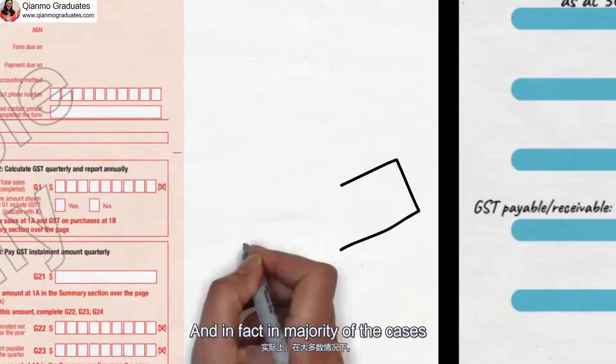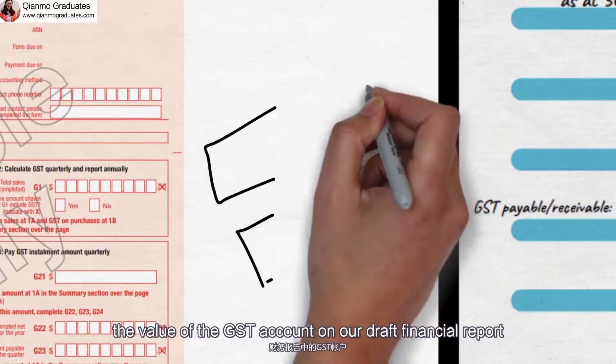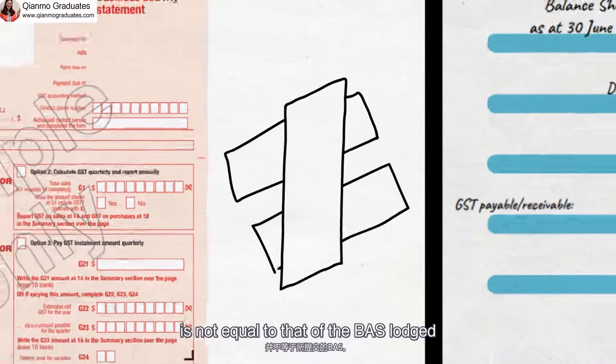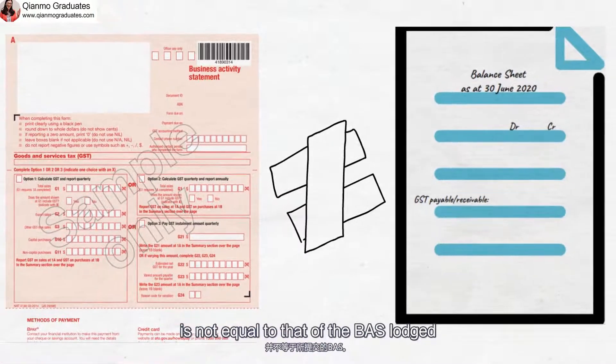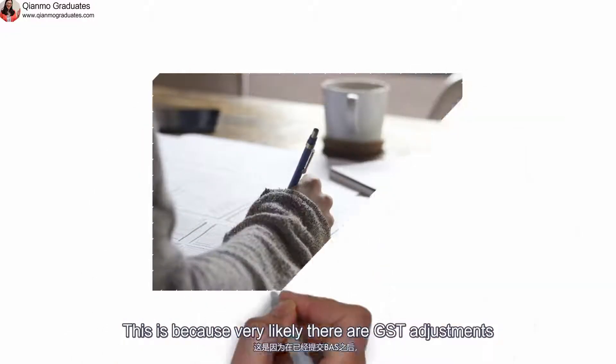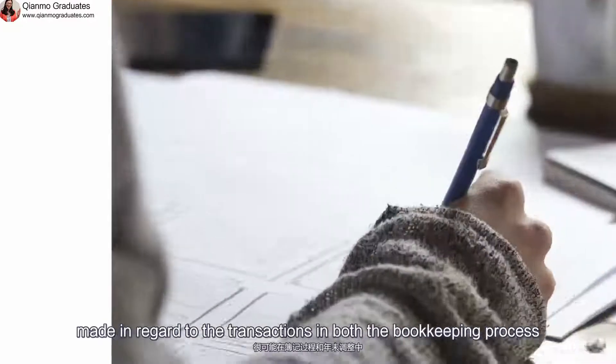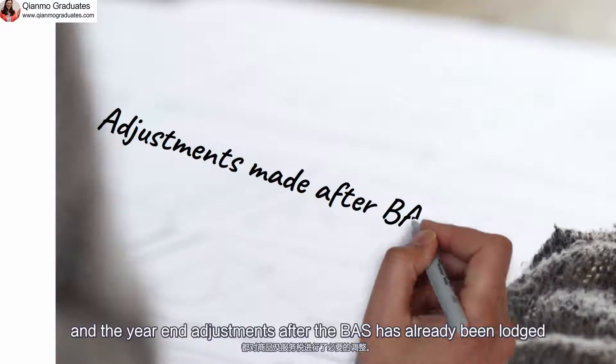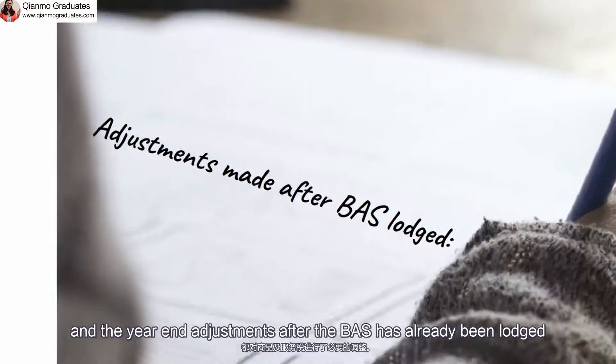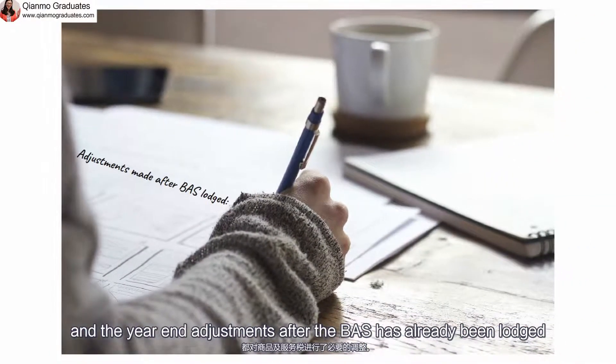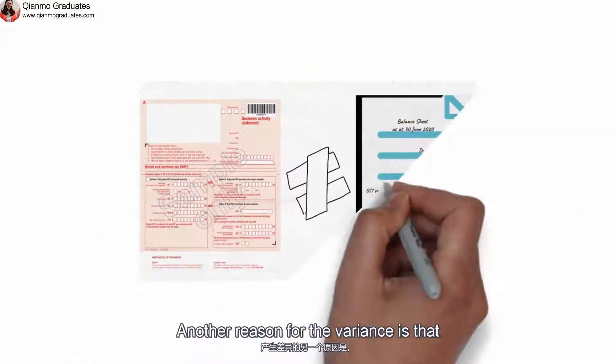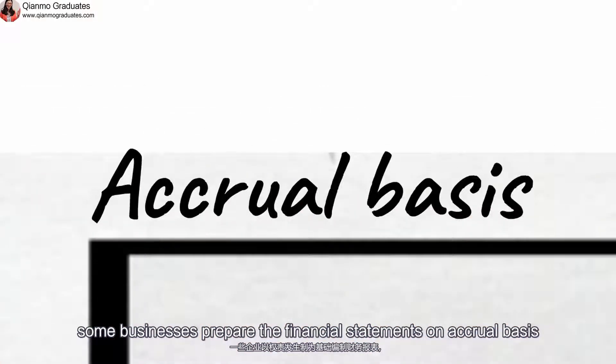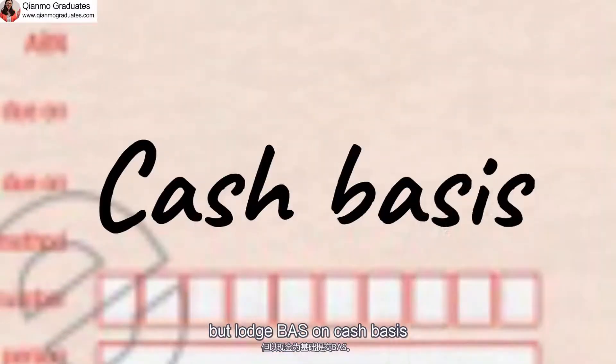And in fact, in majority of the cases, the value of the GST account on our draft financial report is not equal to that of the BATS lodged. This is because, very likely, there are GST adjustments made in regard to the transactions in both the bookkeeping process and the year-end adjustments after the BATS has already been lodged. Another reason for the variance is that some businesses prepare the financial statements on accrual basis but lodge BATS on cash basis.